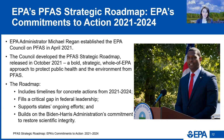The roadmap does several things. It includes clear timelines for concrete actions from 2021 through 2024. It fills a critical gap in federal leadership, setting a basic floor of federal protection across the country. It supports states' ongoing efforts to tackle PFAS by building critical science, methods, tools, and technologies. And it builds on EPA's commitment to restore scientific integrity by making science the foundation of our work.